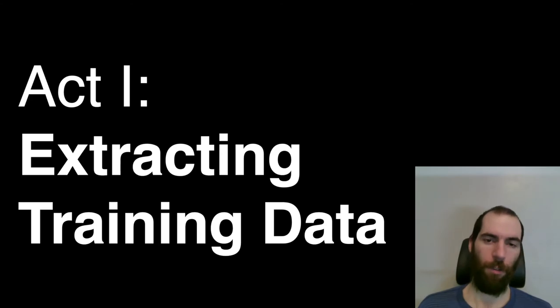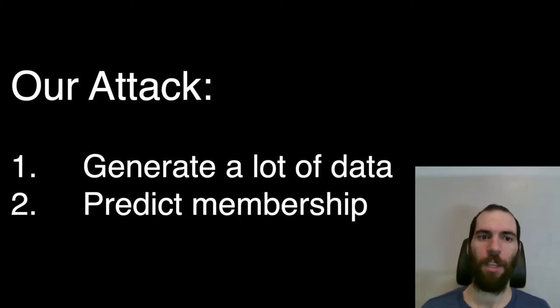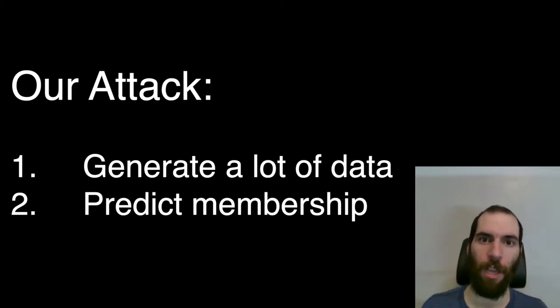Let me explain how we do this — it's actually quite simple. We're going to attack a language model: these are models where you have some text as input and it predicts the output. Here we have input text talking about unicorns in the Andes Mountains, and the output gives them names and goes on about them. To extract training data, we use the fact that these models are designed to generate data — we just make them spit out a lot of data. Then we use a membership inference attack to filter between data that just happens to be output and training data that was memorized.